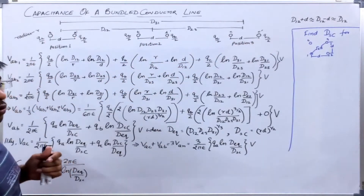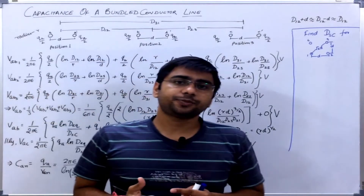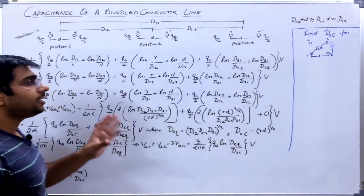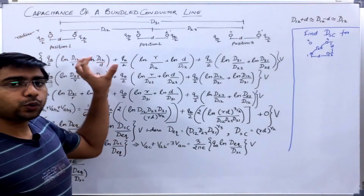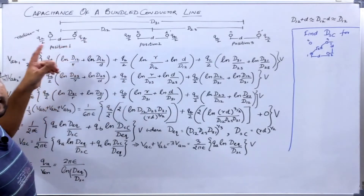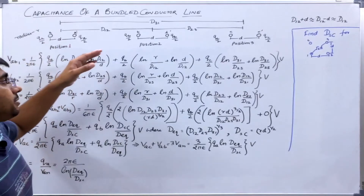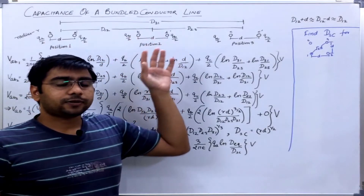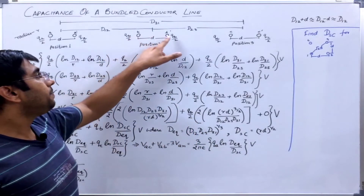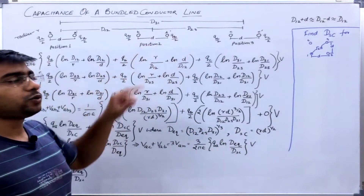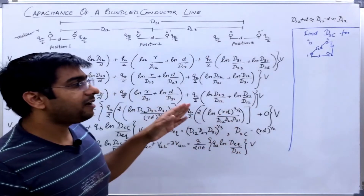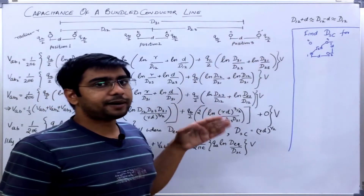We are also assuming that the charge distributes equally between the same phase conductors. If there is total charge QA on phase A, then A and A dash will carry equal charge, that is QA by 2 and QA by 2. Similarly, if phase B carries total charge QB, then each strand will carry QB by 2. Similarly, if phase C carries total charge QC, it will be equally divided between the two strands as QC by 2.